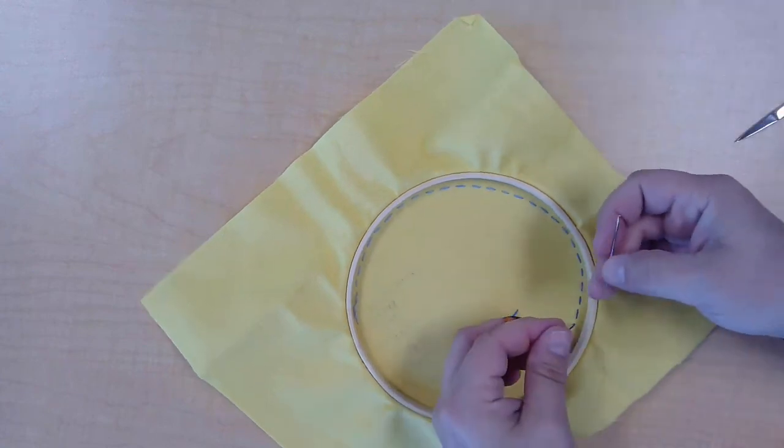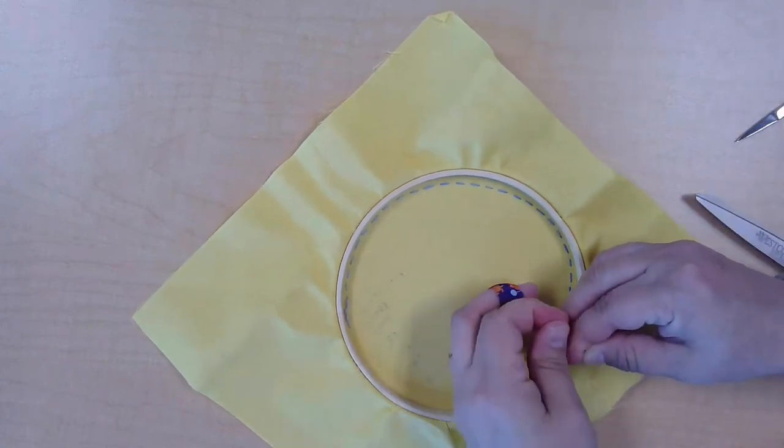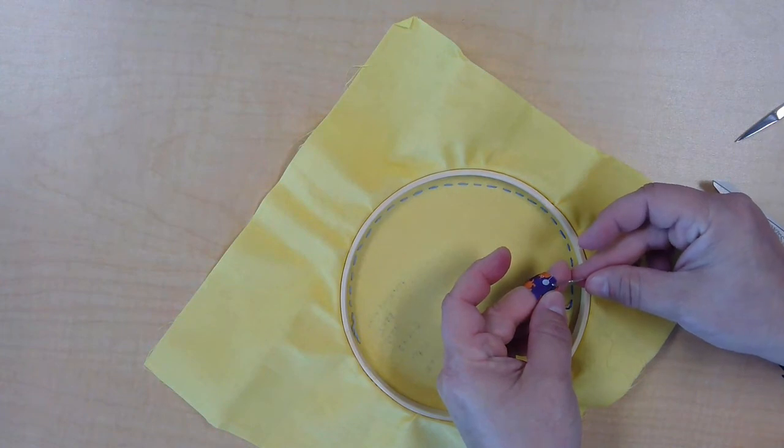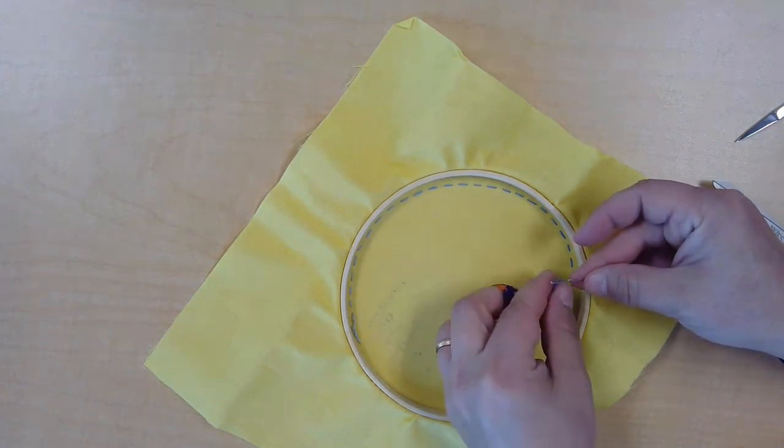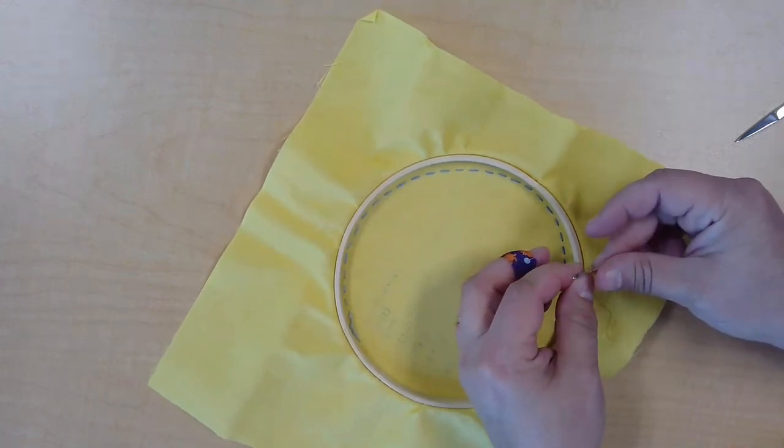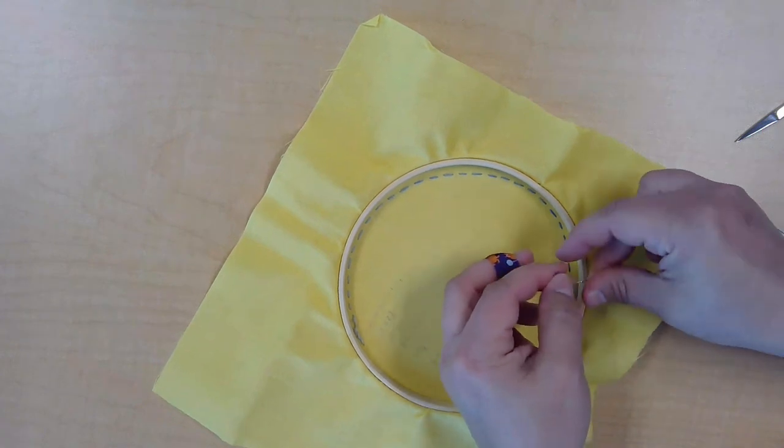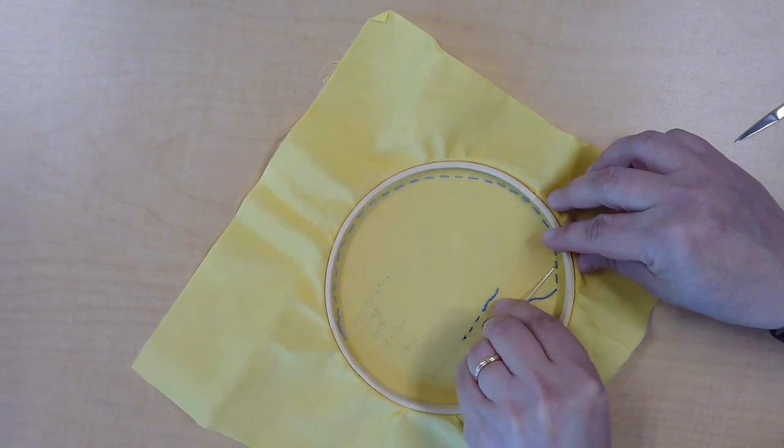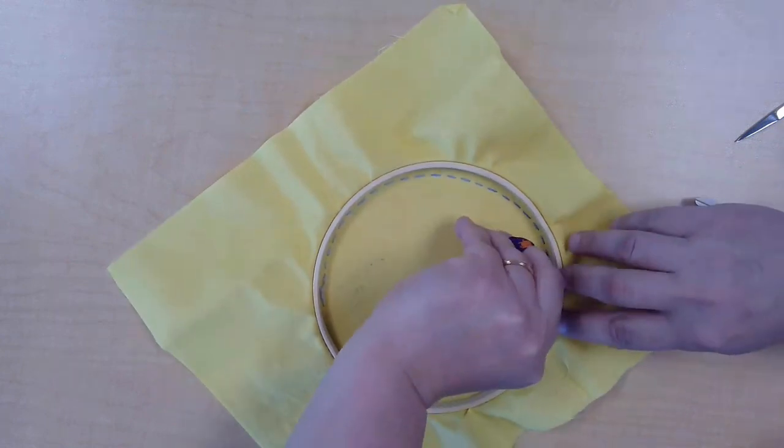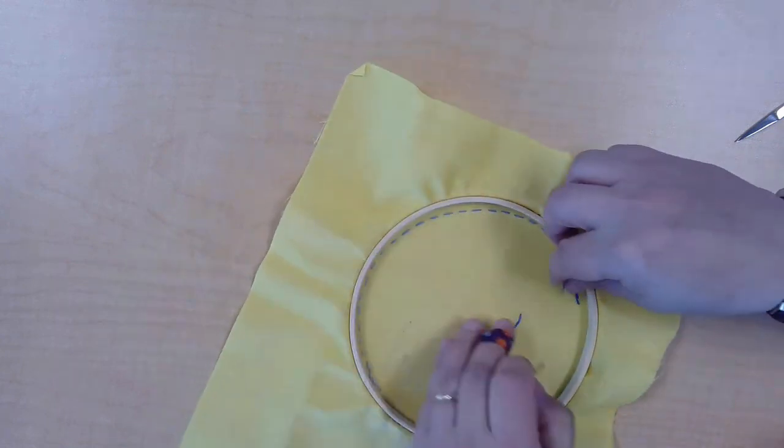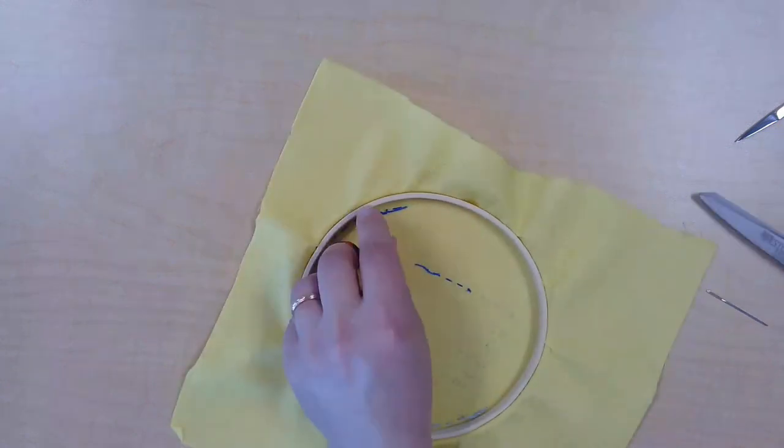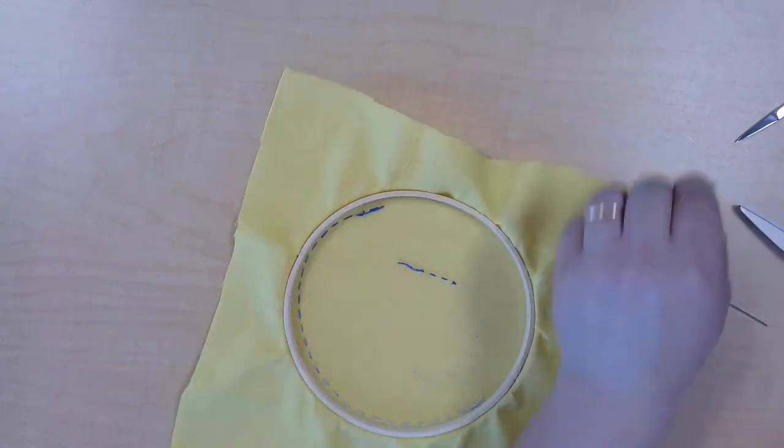Now, if I'm nervous about this first stitch and I want to go in and anchor it, I can thread my needle in there. Again, this is why it's good to leave a good tail there so that you can go back and do this if you want to. And you can run it under the stitches that you already made and anchor it down there. And then trim the extra like that.